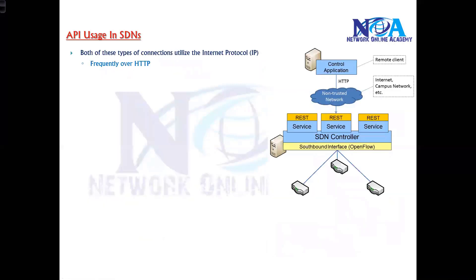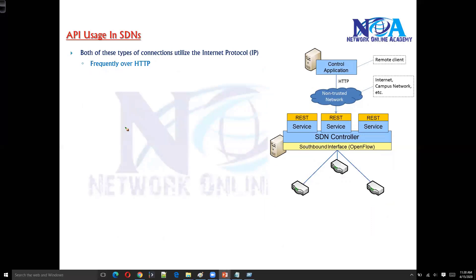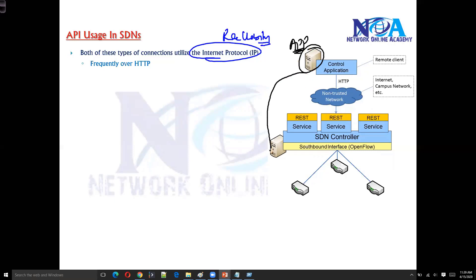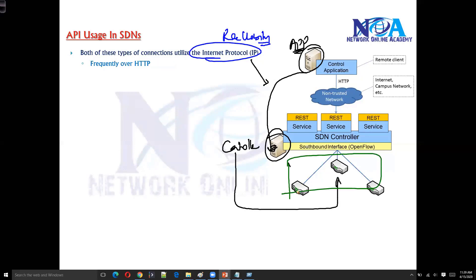Now in order to communicate, one thing to remember is that at the backend you must have some kind of IP network built and you must have reachability. The application may not be running on the local controller, so this application can only interact with the controller when you have an IP network built with reachability between them. Similarly, the controller can only talk to networking devices when there is reachability between them.